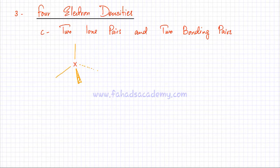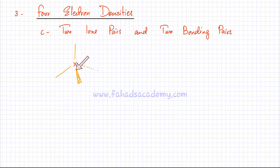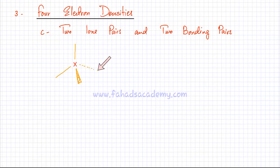In this lecture we're going to discuss the third version of four electron densities, this time with two lone pairs and two bonding pairs. You have two pairs of electrons that are not bonding in the outer shell, and two pairs that are part of a bond. You have a total of four electron densities, and the basic shape is based on the tetrahedral shape.